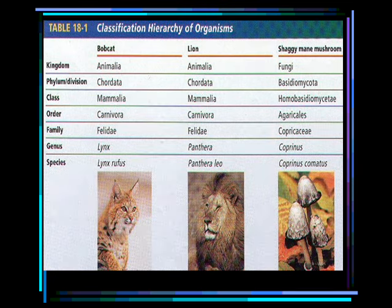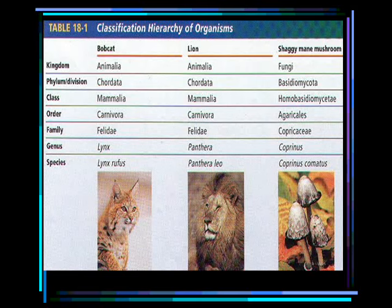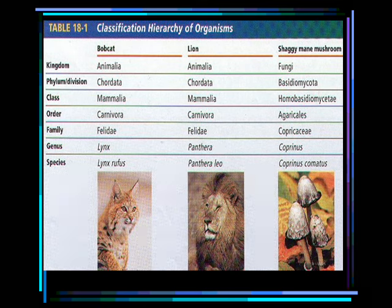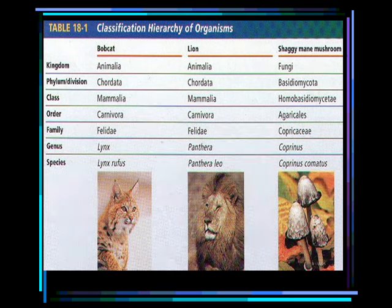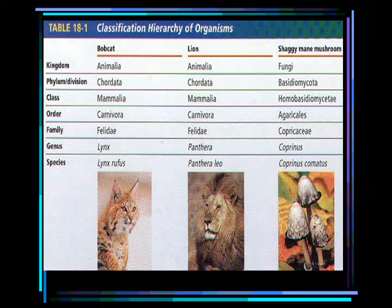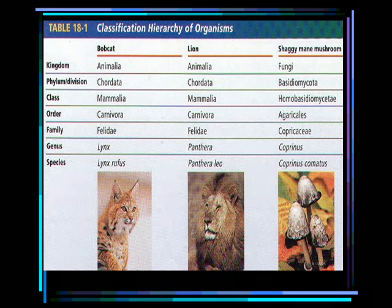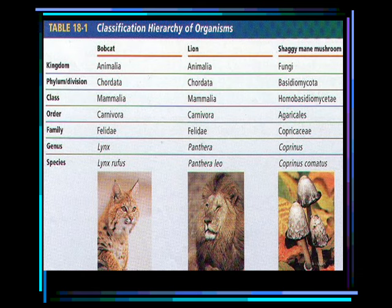Using this classification system, we can group organisms into smaller and smaller groups based on their characteristics. Looking at this table, all of these organisms fall into domain Eukarya. The fungus — the shaggy mane mushroom — splits off quite early into a different kingdom from the two cats, the bobcat and the lion. The phylum that both cats are in is Chordata, meaning they have a spinal cord. They're both in class Mammalia, meaning they're mammals with hair and they give birth to live young. Their order is Carnivora, meaning they eat meat, and the family is Felidae, so they're feline. Then they split into two separate genera: the bobcat is in genus Lynx, and the lion is in genus Panthera. As we move down, the groupings get more and more specific, so fewer and fewer members are found in each group.